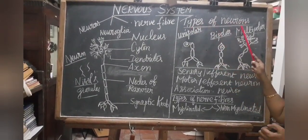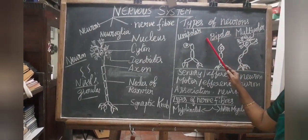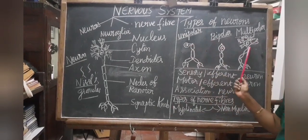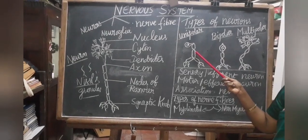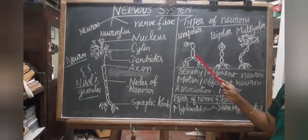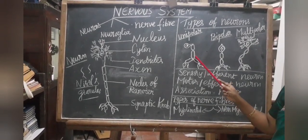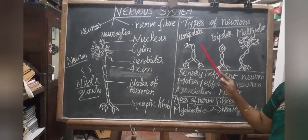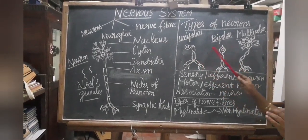Neurons are divided into three types: unipolar, bipolar and multipolar. In unipolar neurons, there is one process that acts as both axon and dendron. Unipolar neurons are present in the early embryo but absent in the adult.